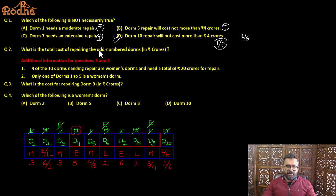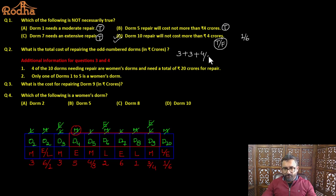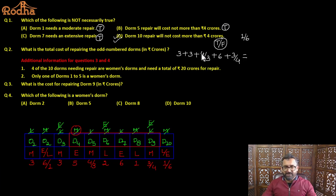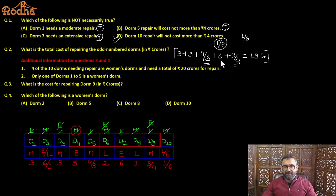What is the total cost of repairing odd-numbered DOMs? Odd DOMs are 1, 3, 5, 7, and 9. DOM 1 needs 3 crore, DOM 3 needs 3 crore, DOM 5 needs 3 or 4 crore, DOM 7 needs 6 crore, and DOM 9 needs 3 or 4 crore. The sum of DOM 5 and DOM 9 is always 3+4=7 crore. So total is 3 + 3 + 7 + 6 = 19 crores.